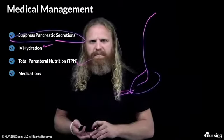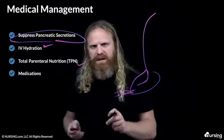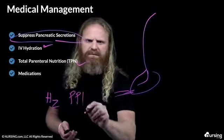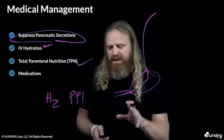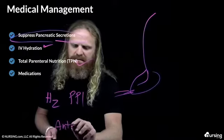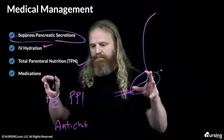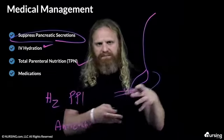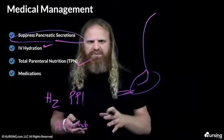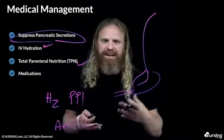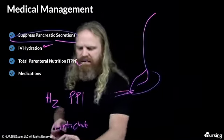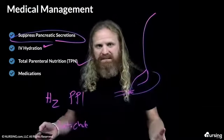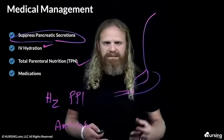As far as medications, we're going to give analgesics — remember, this is extremely painful. We'll also give H2 receptor blockers and proton pump inhibitors (PPIs). One really interesting medication is anticholinergics: think fight-or-flight, we want to decrease gastric secretions by decreasing gastric motility and activity, causing less stimulation. And keep in mind the pancreas controls insulin and glucagon, so these patients will need those medications to control blood sugars, plus pancreatic enzyme replacement.